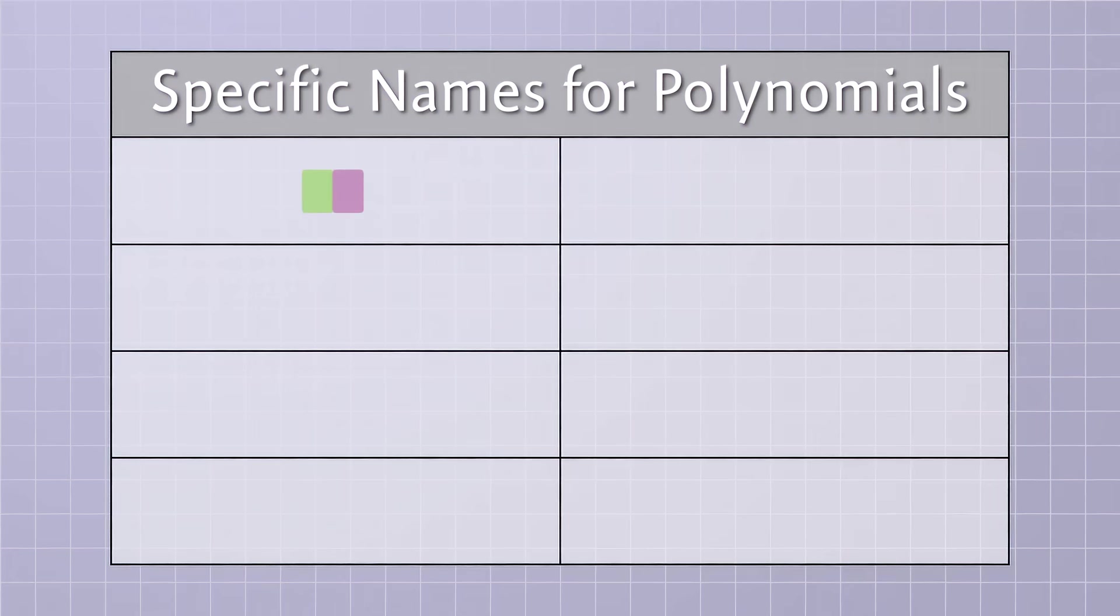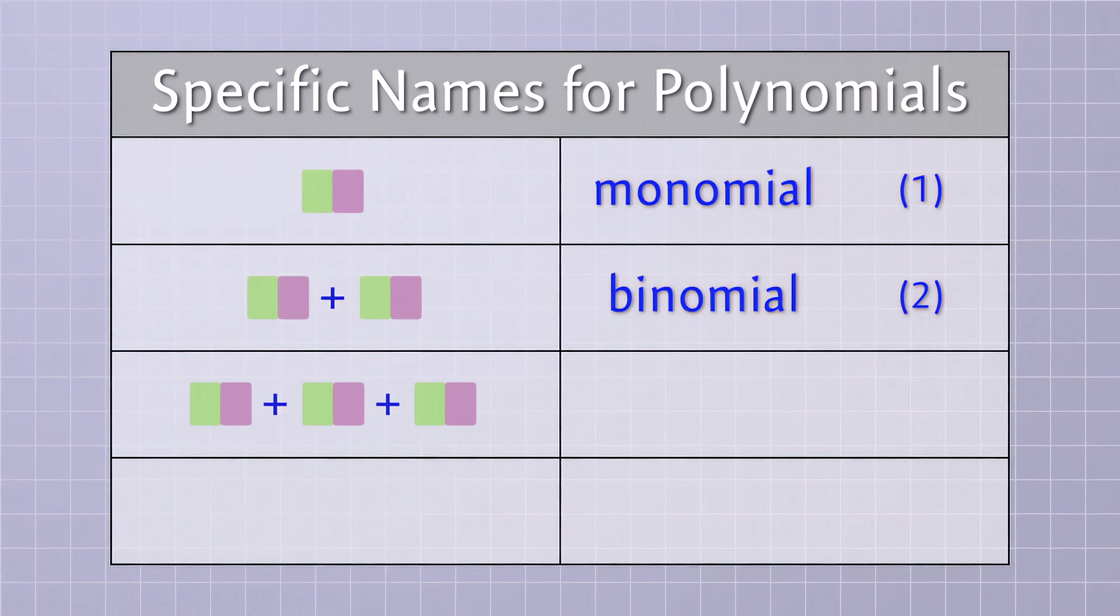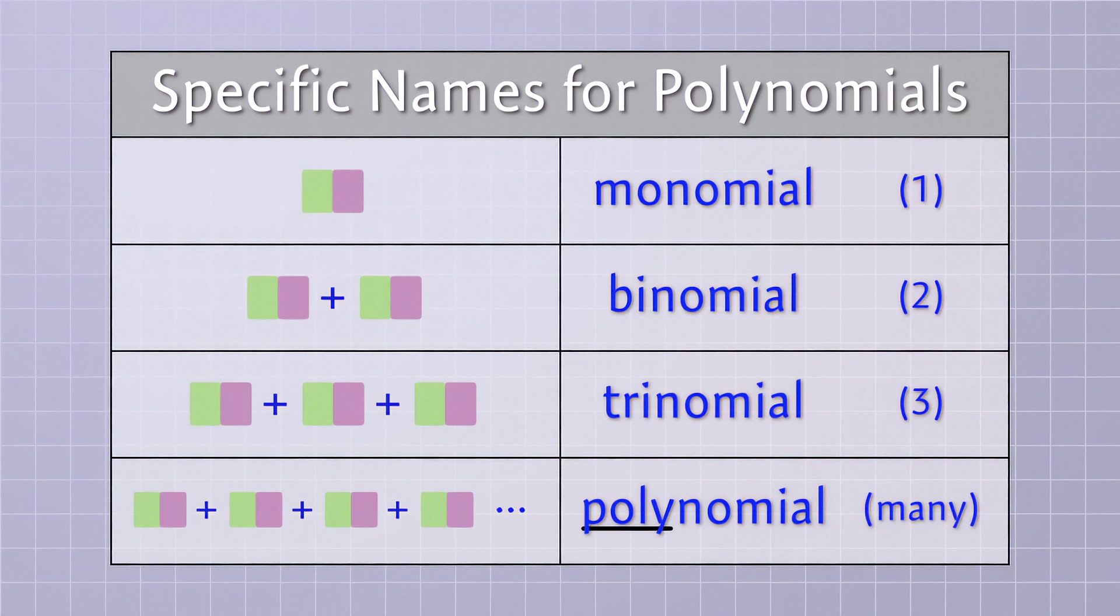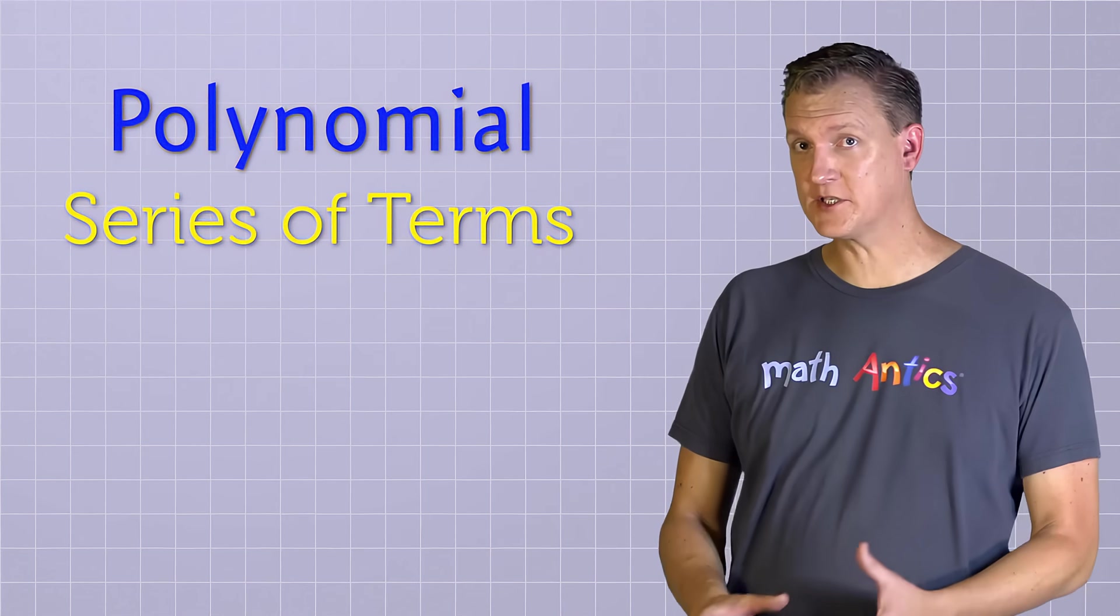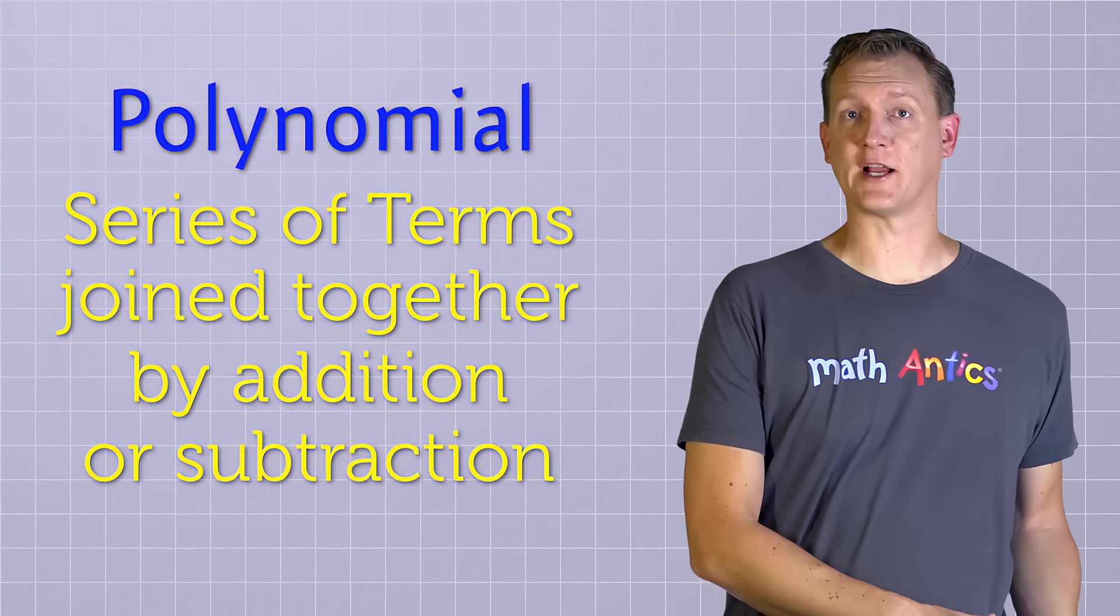If there's only one term, which isn't really a chain, then we call it a monomial because the prefix mono means one. If there's just two terms, then we call it a binomial because the prefix bi means two. And if there's three terms, then we call it a trinomial since the prefix tri means three. Beyond three terms, we usually just say polynomial since poly means many. And in fact, it's common to simply use the term polynomial even when there are just two or three terms. Okay, so that's the basic idea of a polynomial. It's a series of terms that are joined together by addition or subtraction.